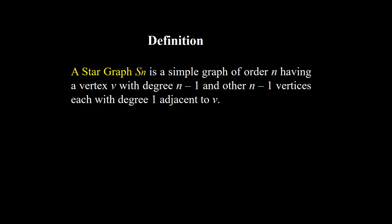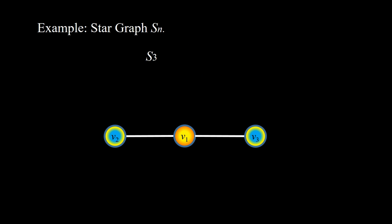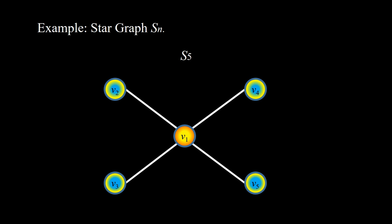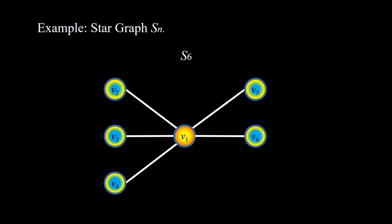A star graph, denoted by Sn, is a simple graph of order n having a vertex v with degree n minus 1, and the other n minus 1 vertices each with degree 1, all adjacent to v. For example, S3 has one vertex with degree 2 and two vertices with degree 1 — and this is actually the same as P3. S5 has one vertex with degree 4 and all others with degree 1. S6 has vertex v1 with degree 5 and each other vertex with degree 1.